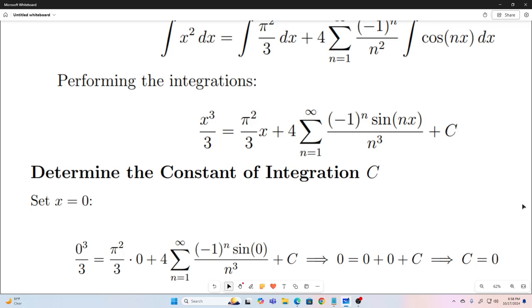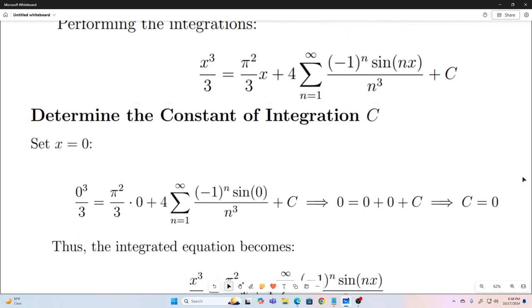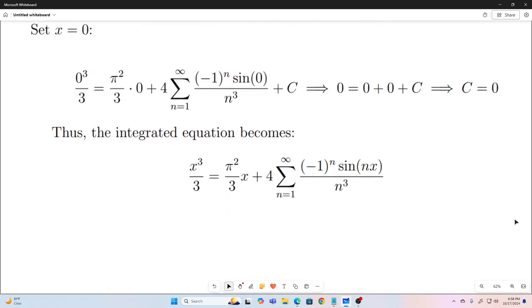So, we have a constant of integration now that we need to figure out. So, all we need to do to figure that out is set x equal to 0, because this has to hold true for all x. So, if we let x equal 0, we will see that c is equal to 0. And there's why right there. So, our integrated equation becomes just this. So, now we're left with just this.